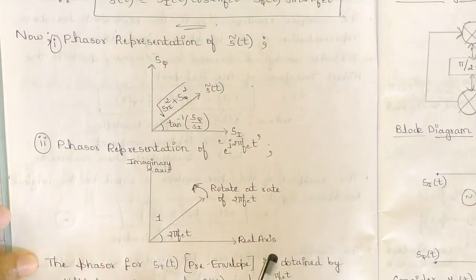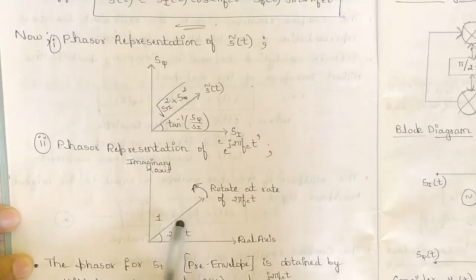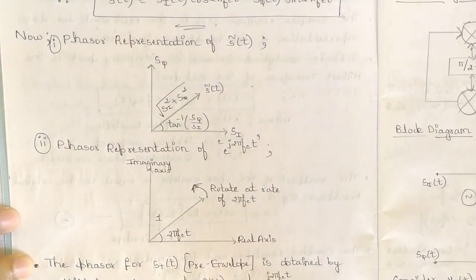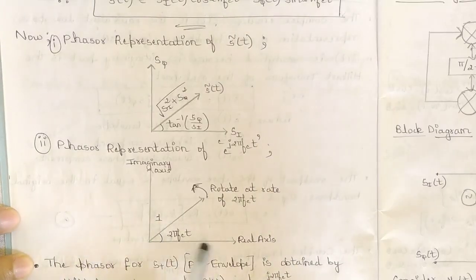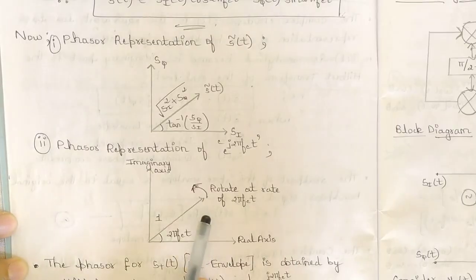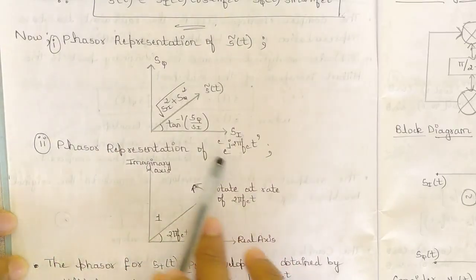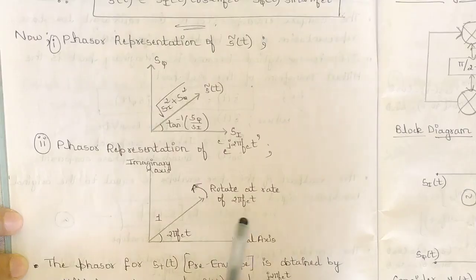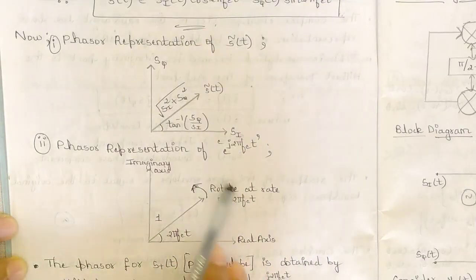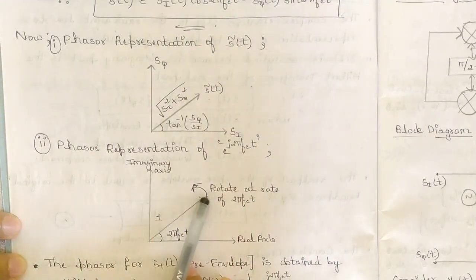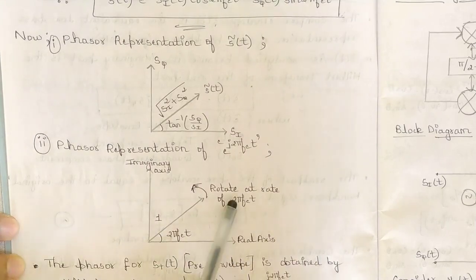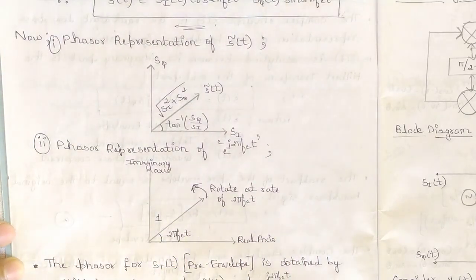For the phasor of the exponential component e^(j2πf_c·t), the magnitude is 1 and the phase is 2πf_c·t. The rotation takes place continuously — rotating at the rate of 2πf_c·t — so the slope is not constant and changes continuously at that rate.